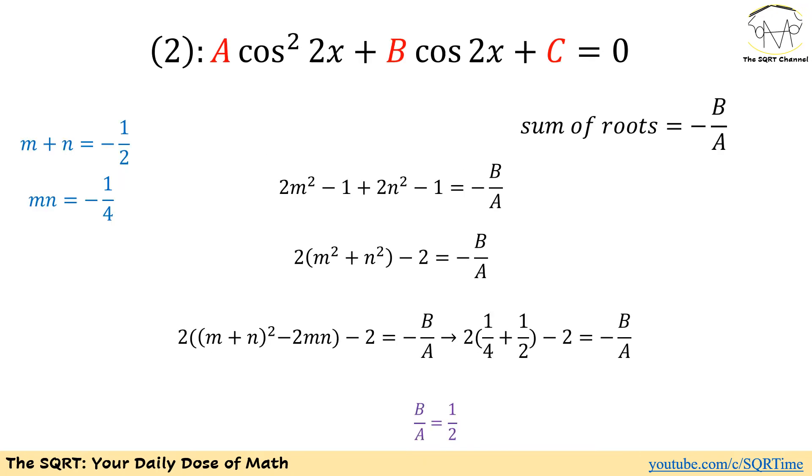Now let's go back to equation number 2. We can use the same approach and write sum of roots as negative B over A. Here roots are cosine of 2X. And remember, we calculated cosine of 2X based on M and N. Sum of them is going to be 2M squared minus 1 plus 2N squared minus 1.